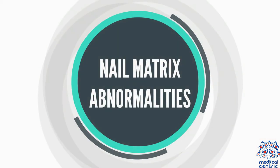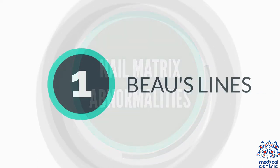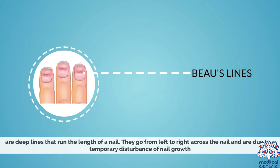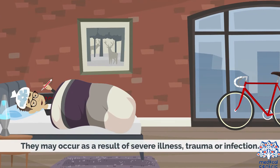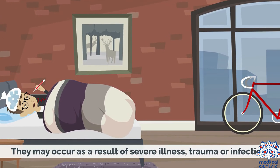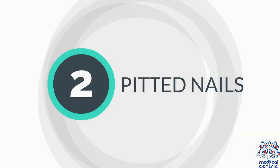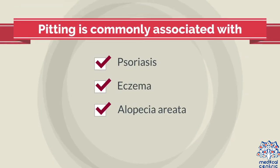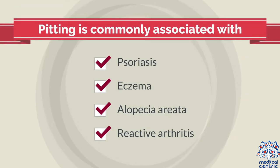Nail matrix abnormalities. Beau's lines are deep lines that run the length of a nail. They go from left to right across the nail and are due to a temporary disturbance of nail growth. They may result from severe illness, trauma, or infection. Pitted nails are small depressions or dents on the nail plate. Pitting is commonly associated with psoriasis, eczema, alopecia areata, or reactive arthritis.